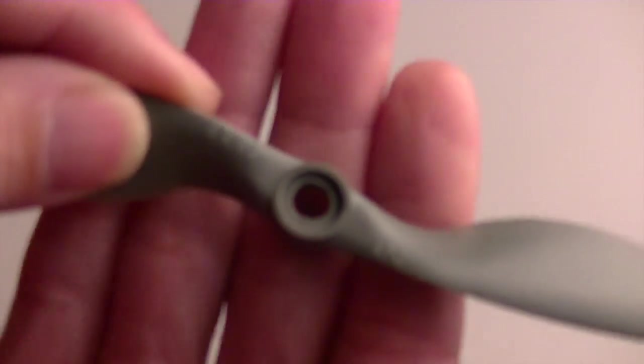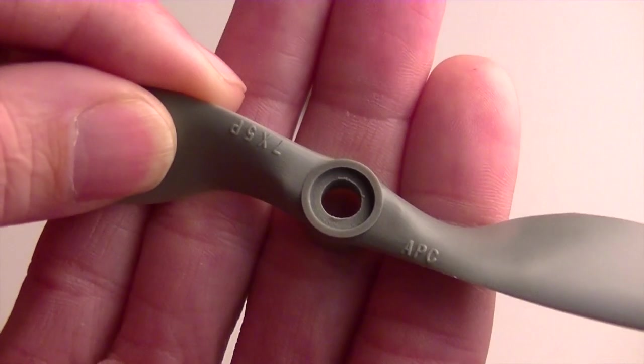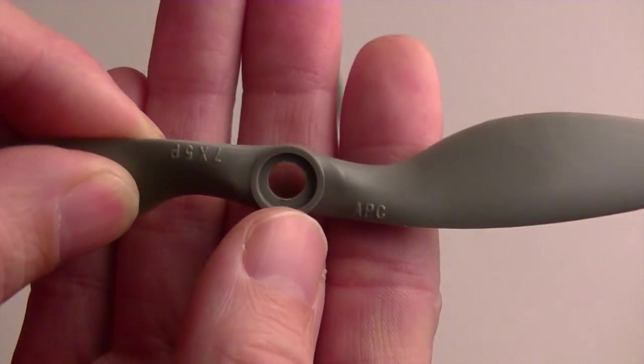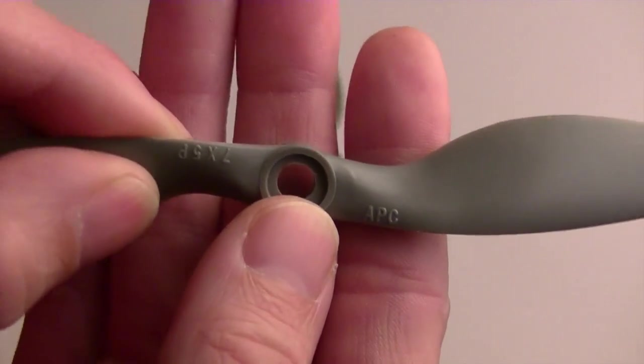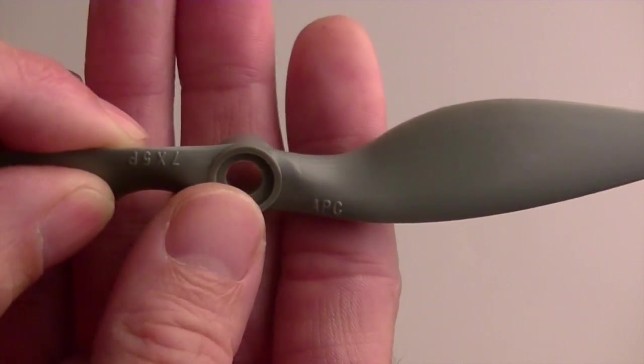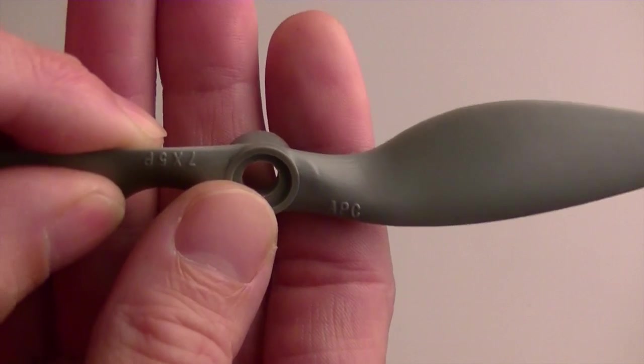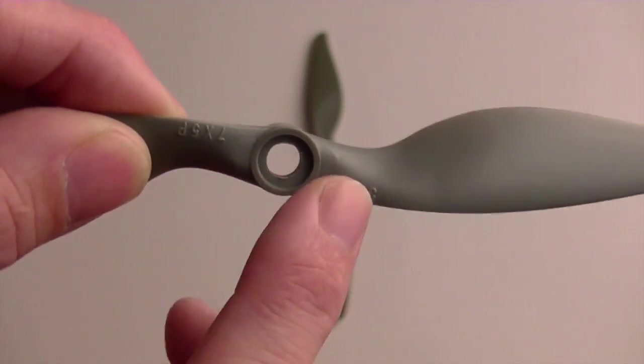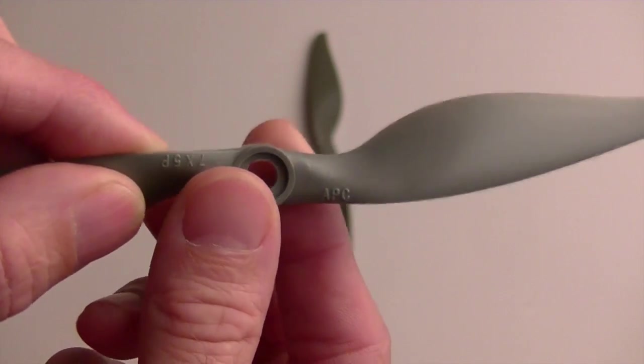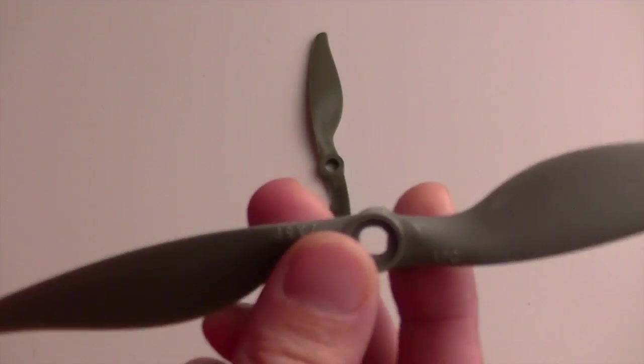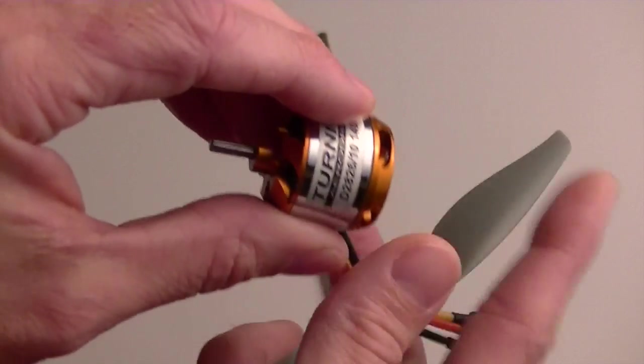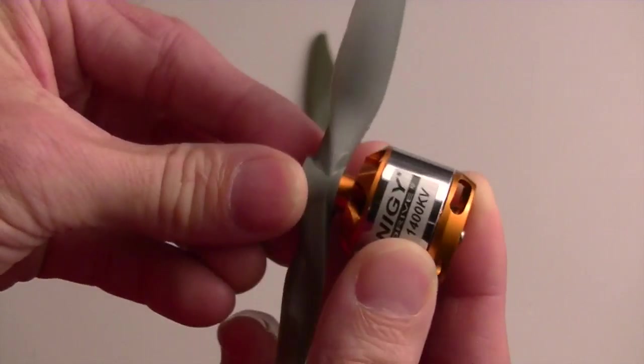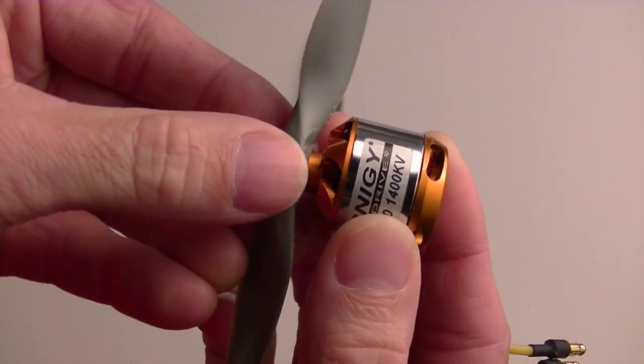So a lot of times you'll hear about the direction of the numbers or letters. So in this case, this is an APC. And the numbers and letters would actually face forward of the aircraft. It doesn't matter how they face against the motor, because that's going to differ depending on your installation. But in this case, you want them facing the front of the aircraft. So if you are on a pusher prop, where your motor is facing the back, like on the Bixler, you're going to want the numbers facing into the motor, because that's where the front of the aircraft is.